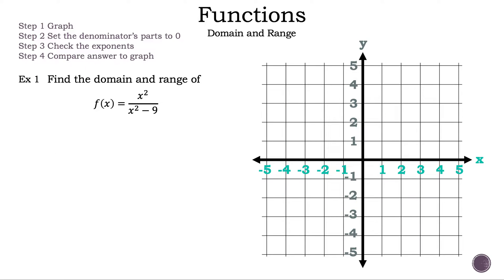Let's read the steps. Step one: graph. Step two: set the denominator's parts to zero. Step three: check the exponents. Step four: compare answer to graph. Now let's read the question. Find the domain and range of the function f of x equals x squared all over x squared minus nine.